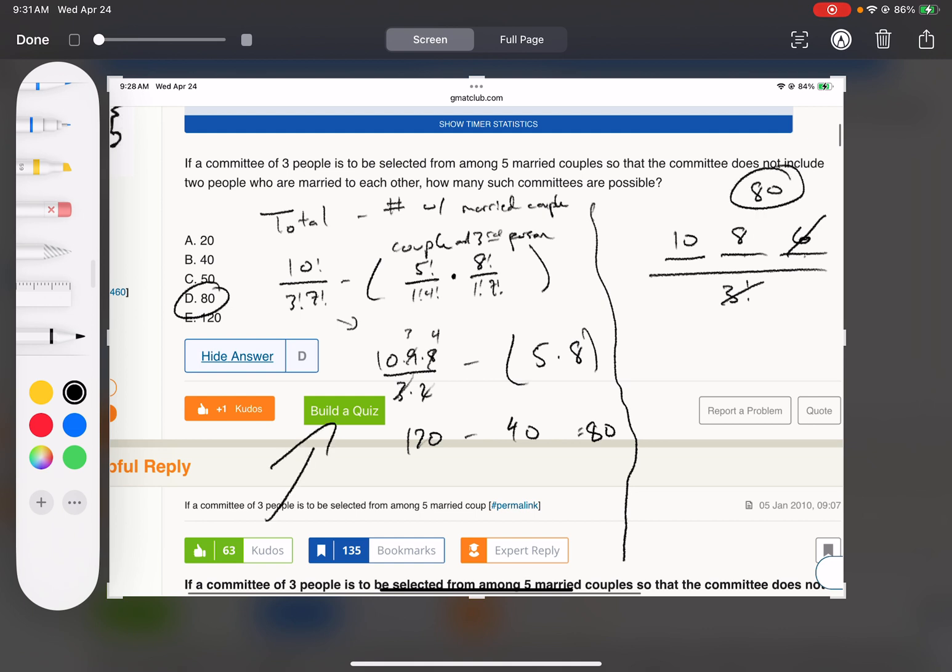This is the more standard approach, doing the total minus. But if you can wrap your head around the logic of this other method, you can often be quicker.